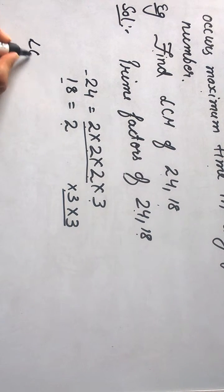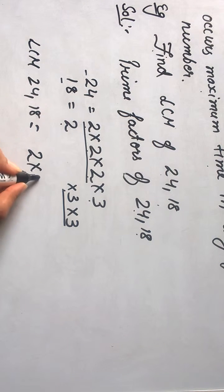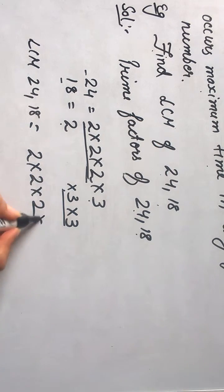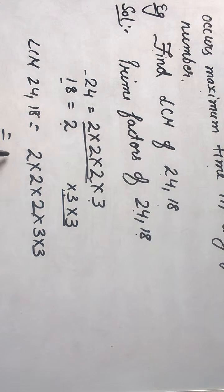So here the LCM for 24 and 18 will be calculated as 2 into 2 into 2 and 3 into 3. And when we calculate this, it is 72.